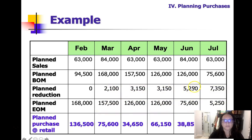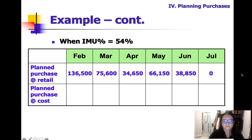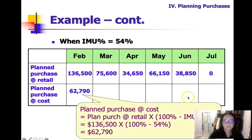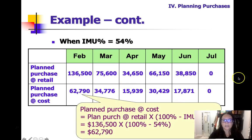We'll do the same for all of these, except the other months have reductions, so we will add those in. When IMU is 54%, we figure out that cost would be 100% minus 54%, which gives us 46%. So 46% of $136,500 and 46% of $75,600 — you can just multiply those times 46%. The first one gives you $62,790. And then we don't have July, so it would be zero.